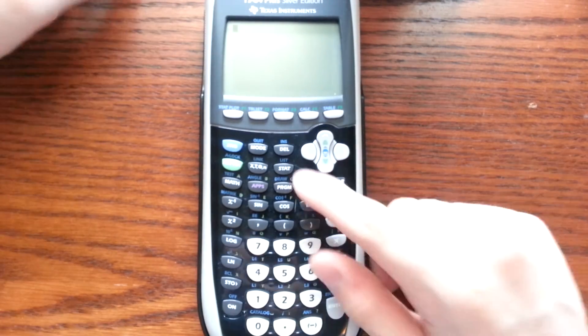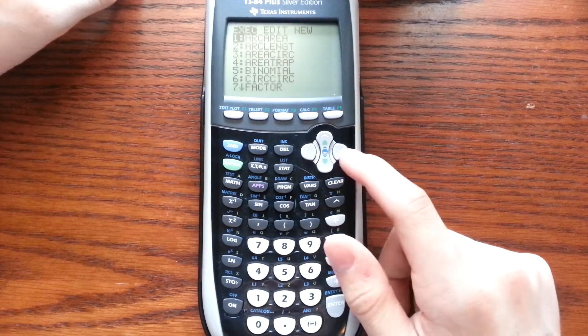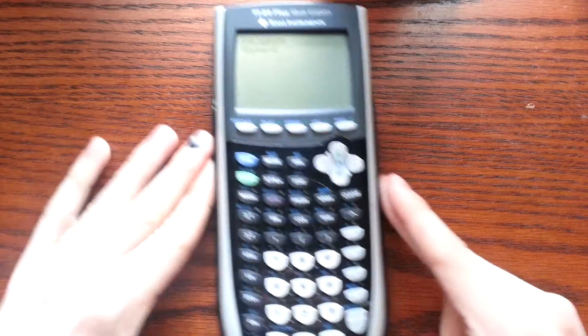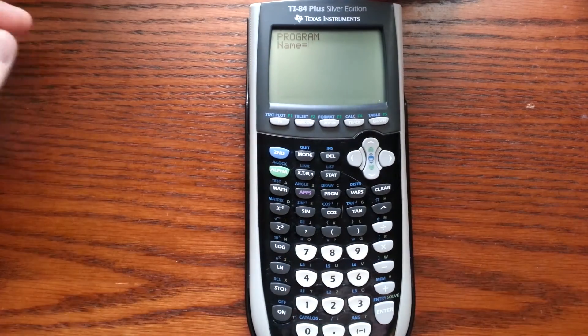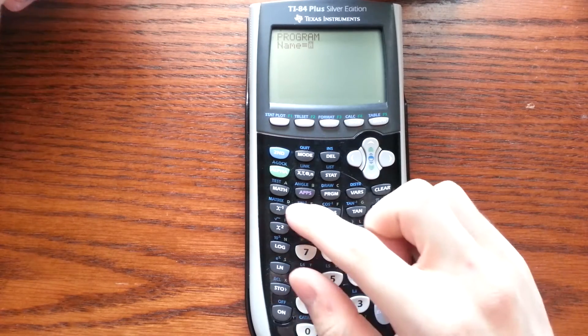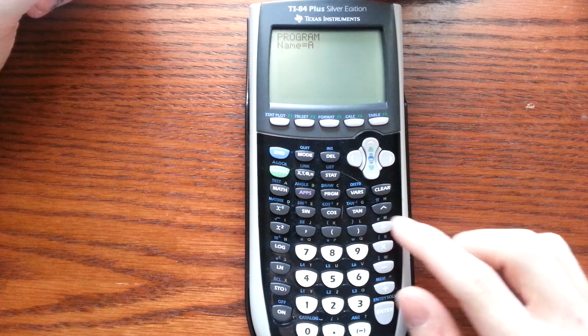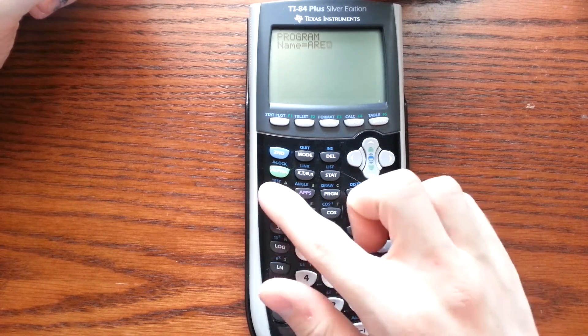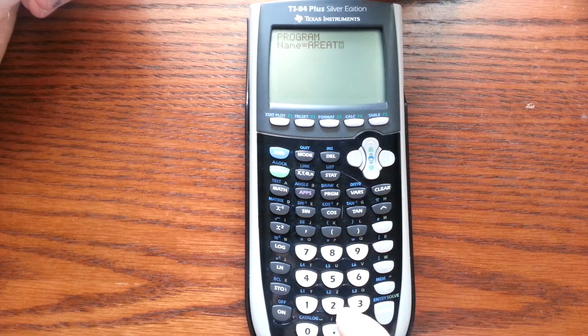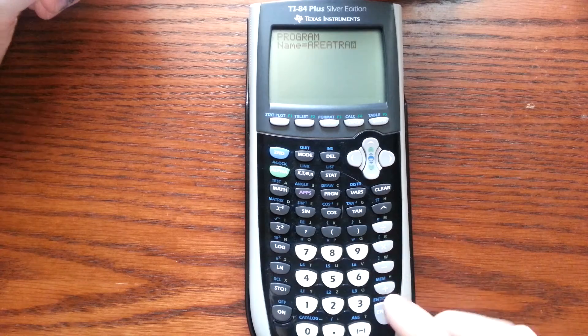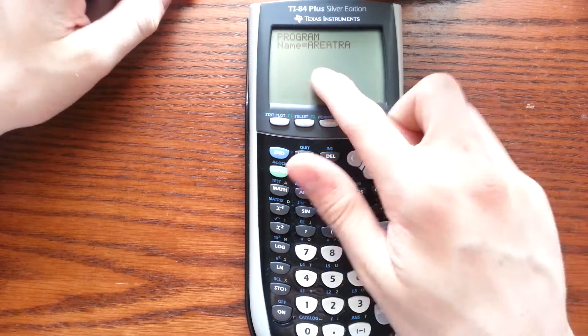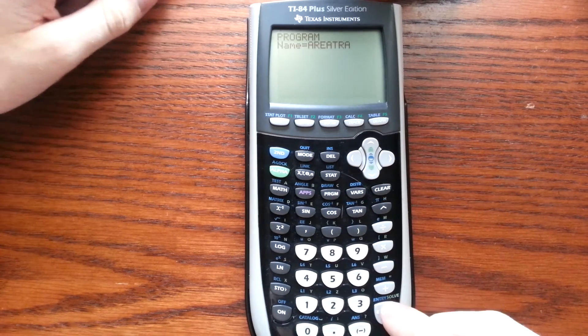To start off, we're going to want to go to Program and go over to New. From New is what we name it here. I'm going to name it Area Trap. Area TRA, because I already have Area Trap in, so I'm just going to name it Area TRA here. Once you have the desired name, you can just press Enter.